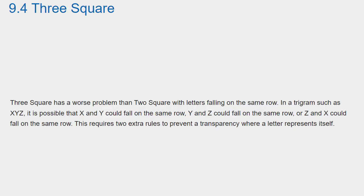Three Square has a worse problem than Two Square with letters falling on the same row. In a trigram such as XYZ, it is possible that X and Y could fall on the same row, Y and Z could fall on the same row, or Z and X could fall on the same row. This requires two extra rules to prevent a transparency where a letter represents itself.